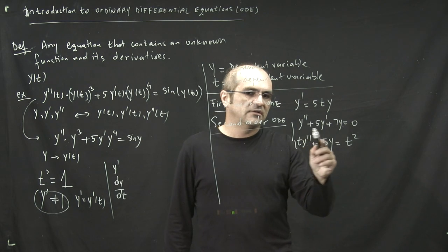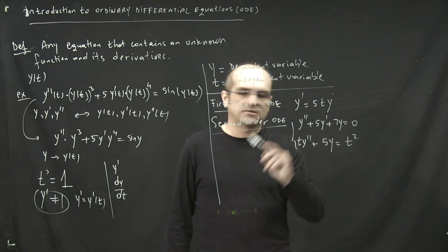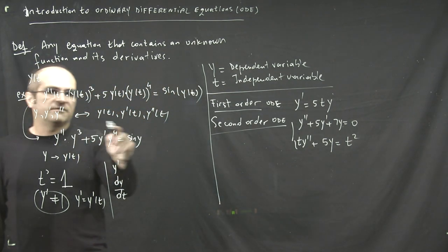You see there is no t apparently in the equation, but of course everything depends on t, because as we mentioned before, y, y double prime, and so on, are really functions of t.